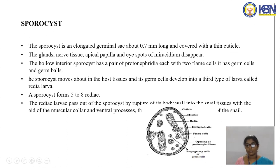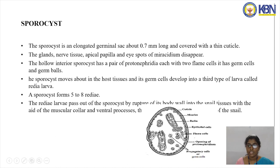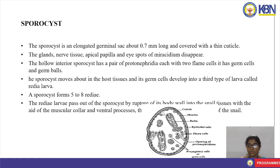Inside the sporocyst we can observe germ cells. These germ cells are present inside the sporocyst. Each sporocyst contains five to eight redia larvae — the next stage after sporocyst larva. Each redia larva ruptures the body wall of the snail tissue with the aid of the muscular collar and ventral processes.